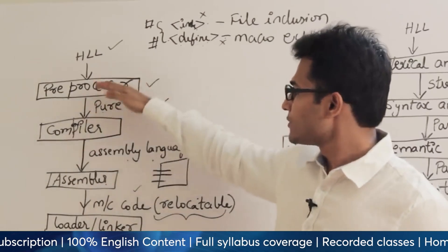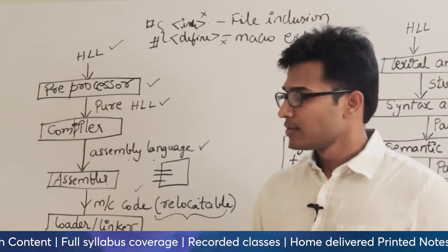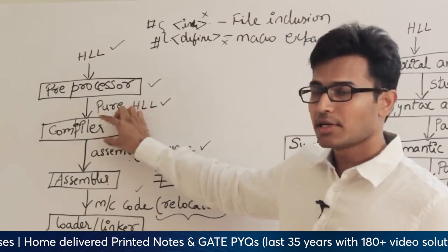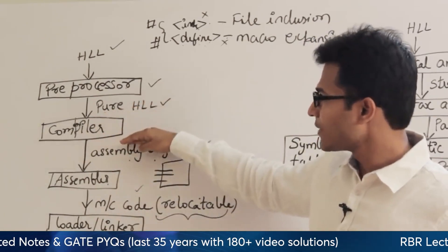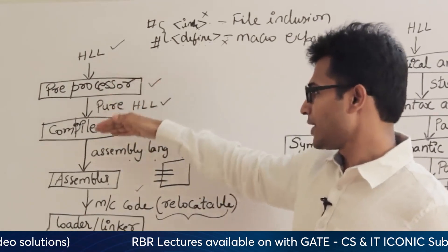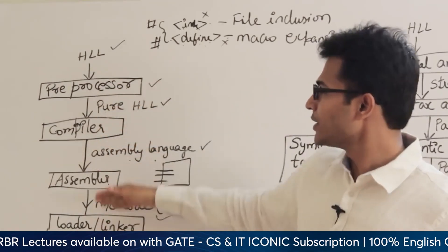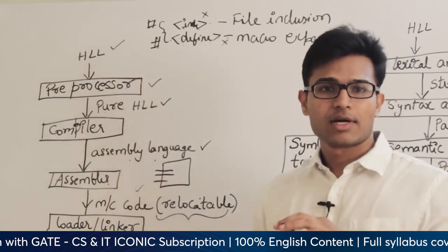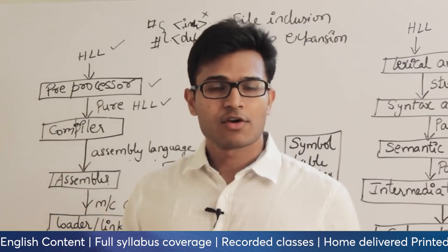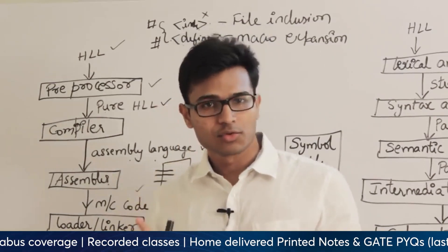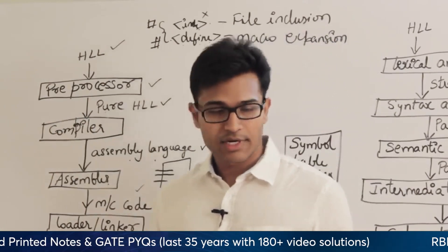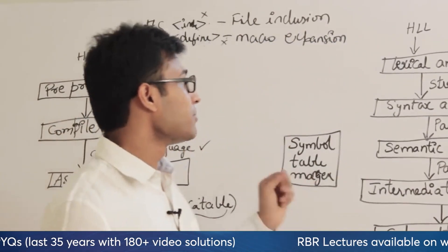If you talk about any compiler like GCC or Turbo C, all these phases are included. But a compiler strictly means only the part which converts pure high-level language to assembly language. In GCC, you need not do preprocessing, assembly, loading, and linking separately — everything is kept in one tool. In this compiler design course, we are only going to look at what the compiler itself does. Let's see what phases are available in the compiler.